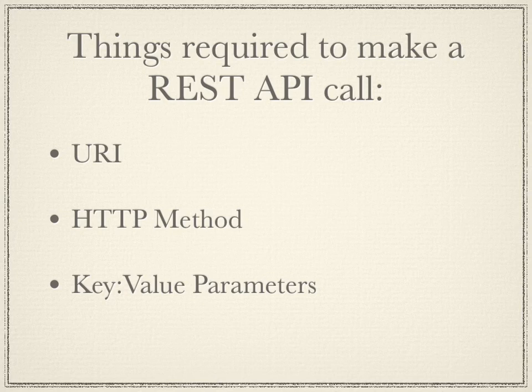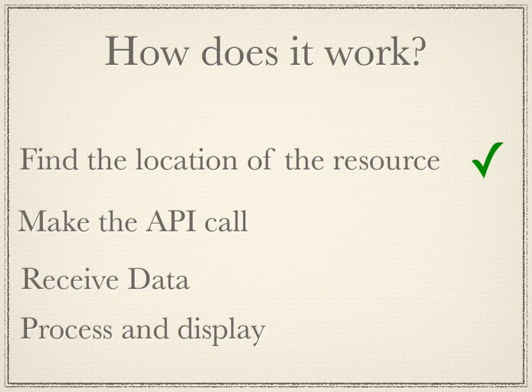The last thing in an API call is optional key-value parameters. Just like passing parameters to a method, you give it the key and set it to a value. For example, with the public timeline, if you pass in a key-value pair for number of tweets with a number, it will pass back that many public timeline tweets. Another example would be passing the ID of the last tweet you received to get everything since then.